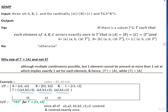The output will be yes if there is a subset T prime which is a subset of T such that each element of A, B, and C occurs exactly once in T prime. That is, the cardinality of A equals the cardinality of B equals the cardinality of C equals the cardinality of T prime, where A = {a such that (a,b,c) ∈ T'}, B = {b such that (a,b,c) ∈ T'}, and C = {c such that (a,b,c) ∈ T'}. Otherwise, the output will be no.